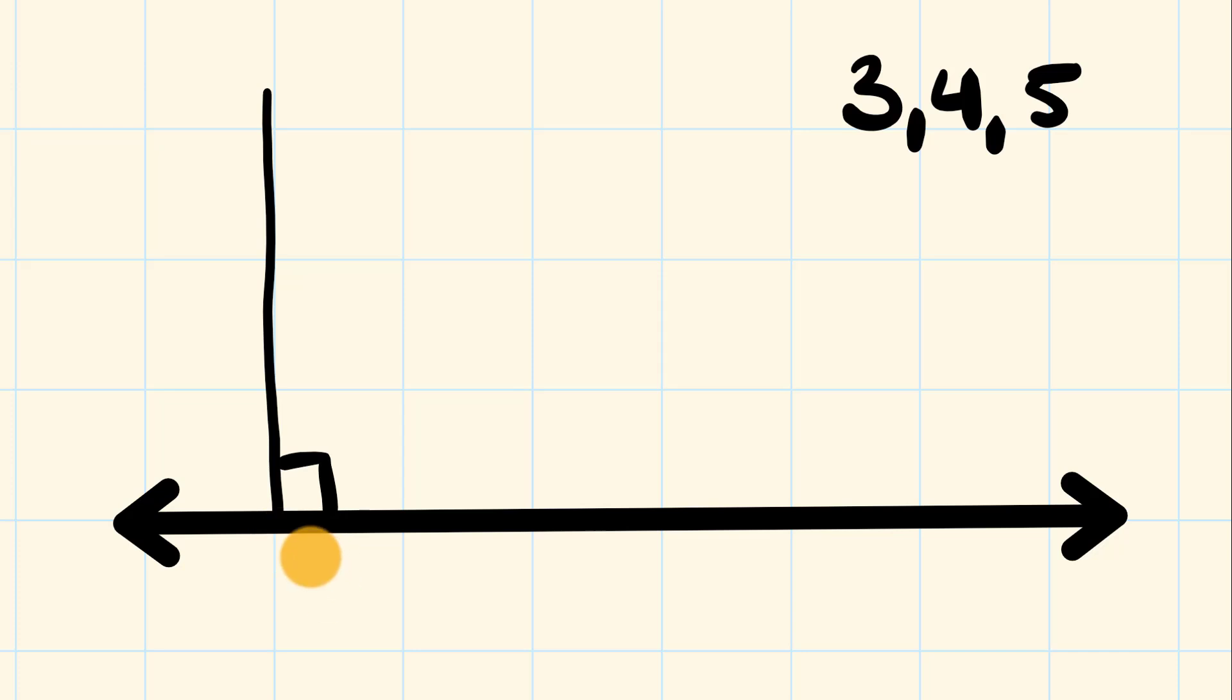But how do we make sure that 90 degrees is perfect? We're going to use the 3, 4, 5 triangle. And it works as follows. So the first thing we do is we mark the point where the wall's coming out from.